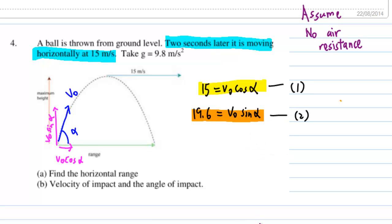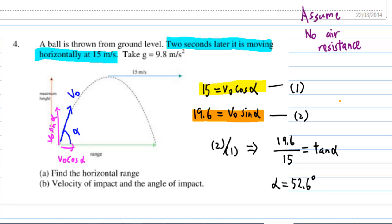Therefore, we have a simultaneous equation. 15 equal to V0 cosine alpha, 19.6 equal to V0 sine alpha. Second equation over first equation, we get 19.6 over 15 equal to tangent alpha, and we have alpha equal to 52.6 degrees.